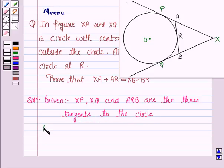Let us now write what we have to prove. We have to prove that XA plus AR is equal to XB plus BR. So let us now start the proof.